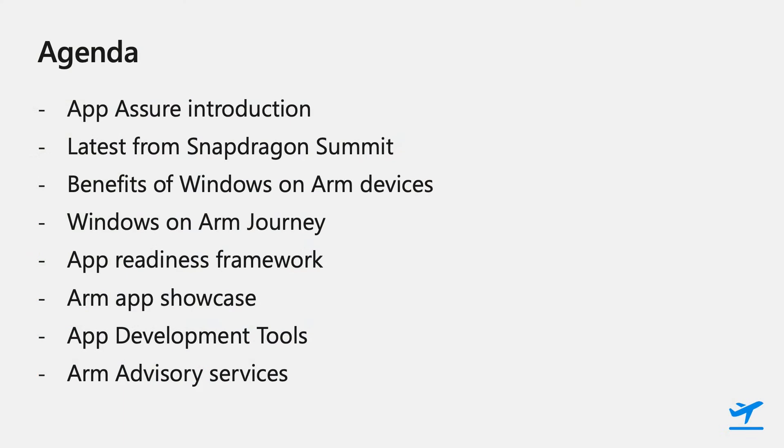Briefly looking at our agenda today, we are going to quickly talk about AppAzure, what the program is all about, and then look at the latest announcements from the Snapdragon Summit. We'll also look at benefits of using Windows on ARM devices, why customers are adopting ARM devices at scale, and the Windows on ARM journey — where we started and where we are now. Next, we'll spend a lot of time on the ARM App Showcase, a list of applications fully optimized for ARM, the app development tools available for developers, and finish off by talking about ARM Advisory Services, a very recently announced offering from our team.